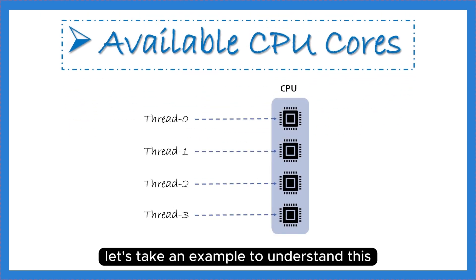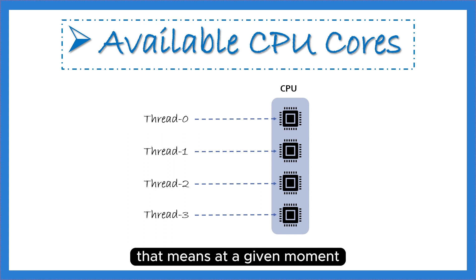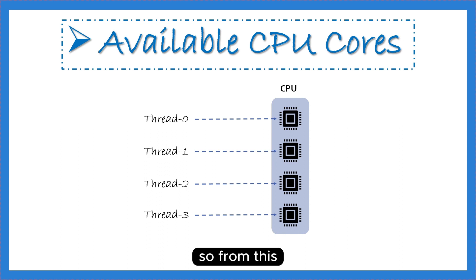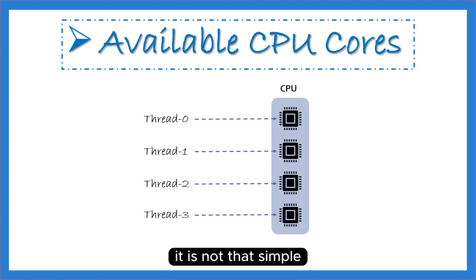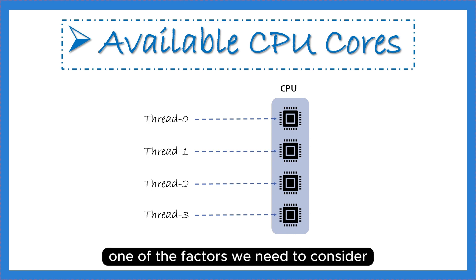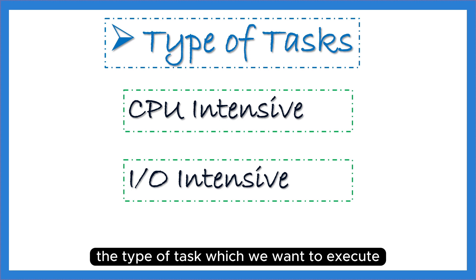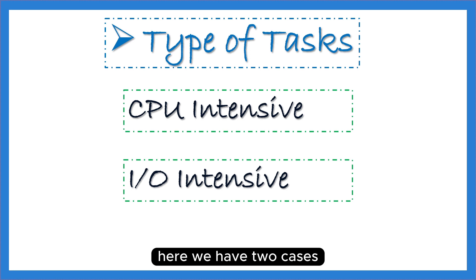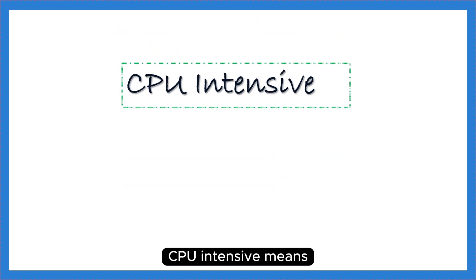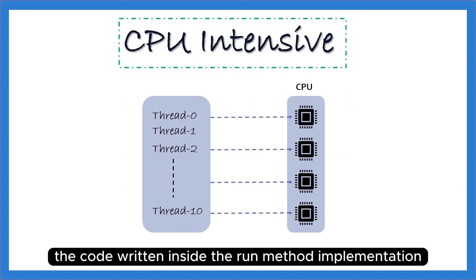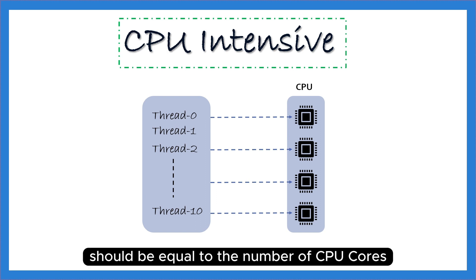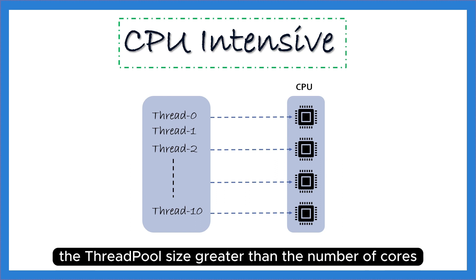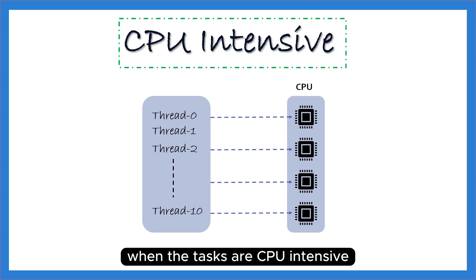Let's take an example. Suppose you have 4 CPU cores — at any given moment your system can run a maximum of 4 threads simultaneously. It seems obvious to set the thread pool size equal to the number of CPU cores, but as mentioned, it is not that simple. The type of task is another important factor. We have two cases: CPU-intensive tasks, and IO-intensive tasks. CPU-intensive means the code inside the run method requires a high degree of CPU cycles for calculation. In this scenario, the ideal thread pool size should equal the number of CPU cores.